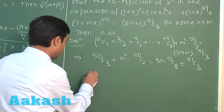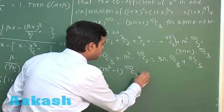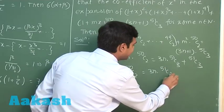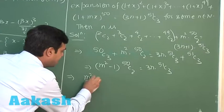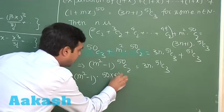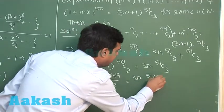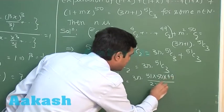We have m square minus 1 times 50 C 2 is equal to 3n times 51 C 3. Just expand to get the relation in m and n. m square minus 1 multiplied with 50 into 49 upon 2 equals 3n multiplied with 51, 50, 49 upon 3, 2, 1.